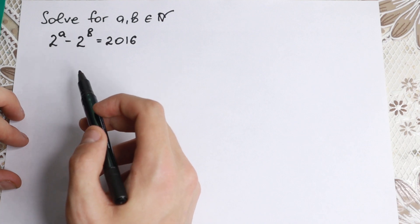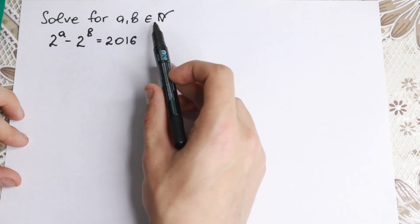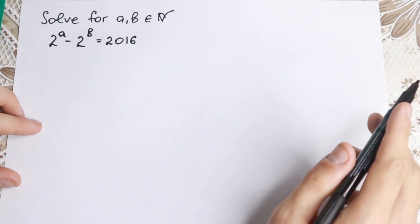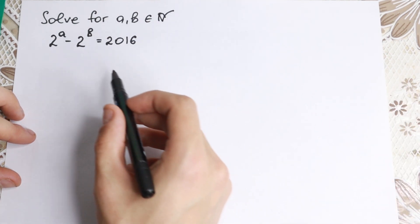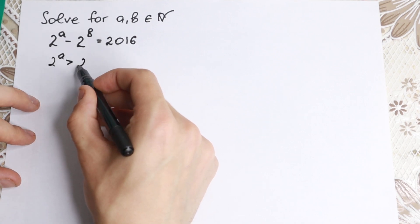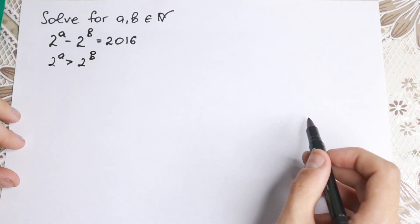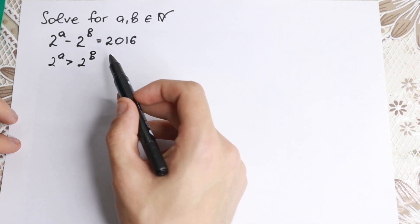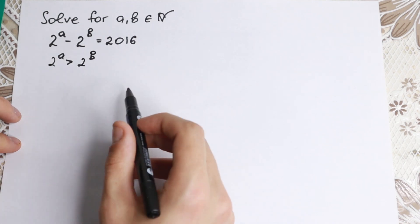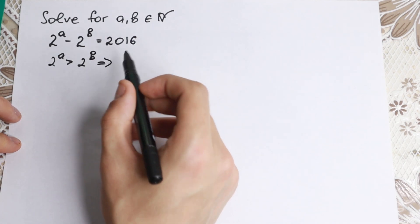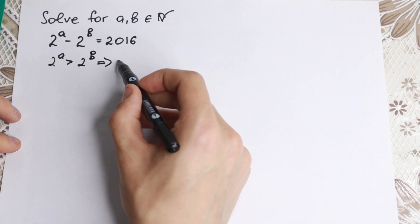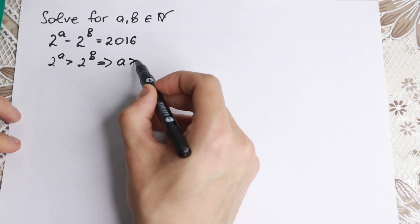We have 2 to the power a minus 2 to the power b equal to 2016, and we need to find integers a and b. First, 2 to the power a needs to be greater than 2 to the power b, because the right-hand side is positive — 2016 is positive. So a must be greater than b.